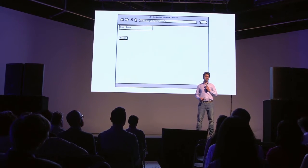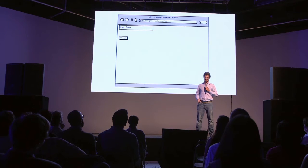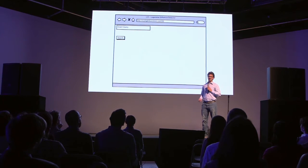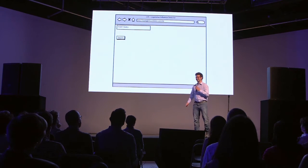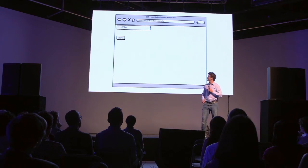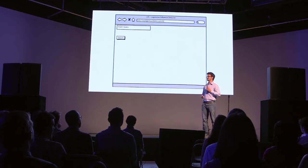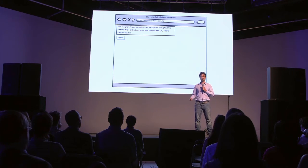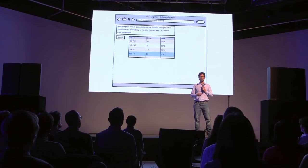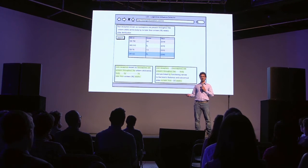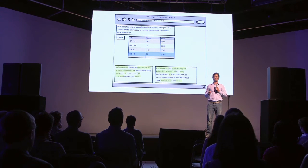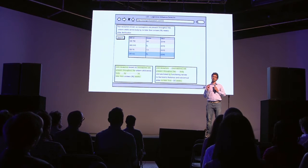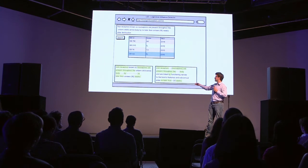Our tool, the Legislative Influence Detector, or LID for short, automates this process by using machine learning algorithms. It works as follows: you insert text, such as a portion of a bill or the whole document itself, into a search box, and then LID outputs a list of candidate bills. Once the user clicks on one of these candidate bills, LID outputs the shared text between these bills. LID uses an algorithm from bioinformatics that is used to identify similar regions in DNA sequences, and that's how it actually finds this similar text.